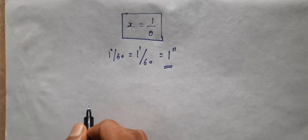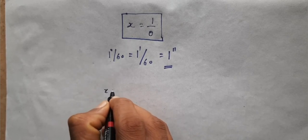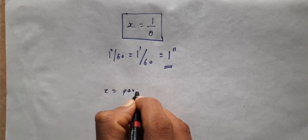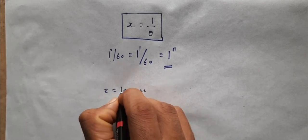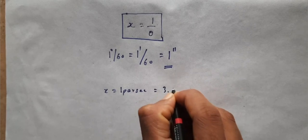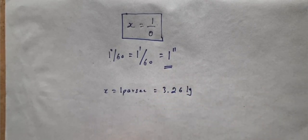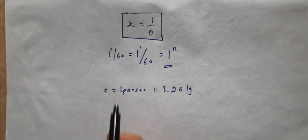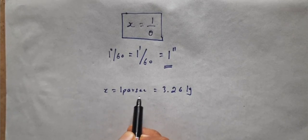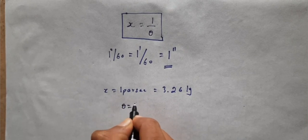Once it is done, by substituting θ in terms of arc seconds, we obtain distance x in parsecs. As I have stated earlier, 1 parsec is equal to 3.26 light-years. Let me define it. 1 parsec is a distance at which θ is 1 arc second, that is, the parallax angle is 1 arc second.